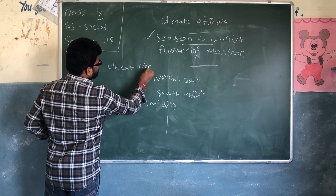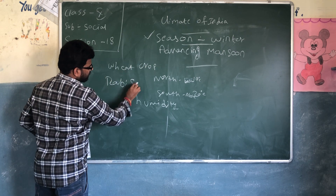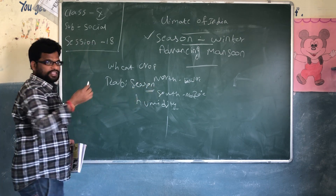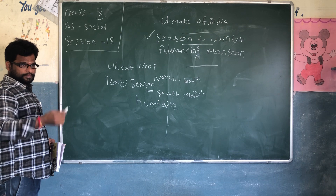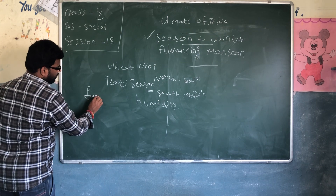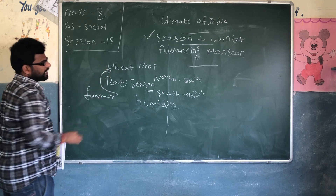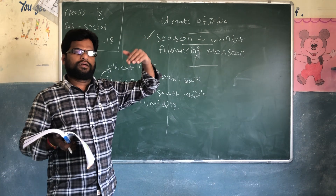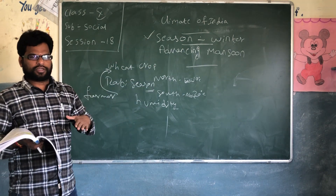This rainfall is a boon to the wheat crop, which is generally cultivated in the Rabi season. Because of rainfall, all the agriculture lines will be in the water, and the farmer will ultimately benefit from this cultivation.